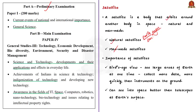Coming to the second type, a man-made satellite is a machine which is launched into space and orbits around a body in space. For example, we often hear about Hubble Telescope and International Space Station — these are all man-made satellites. So we have learnt what is a satellite.